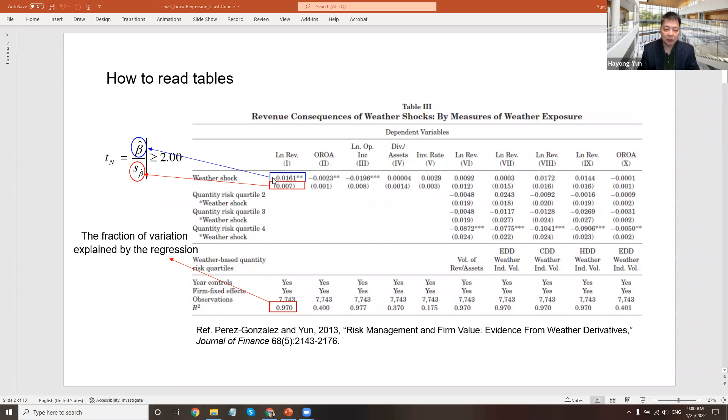How do we decide whether we should take this minus 0.0161 seriously? Here it is. We call what we call a t-statistic, the ratio of this parameter estimate divided by the standard error. If that number exceeds an absolute value, if that number exceeds 2, then take this number seriously. It is not a fluke. It is something different from zero. Weather shock will have a relationship with log of revenue.